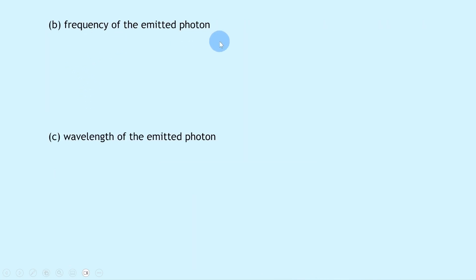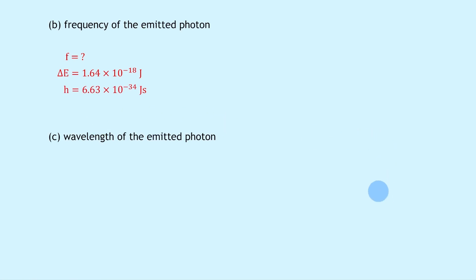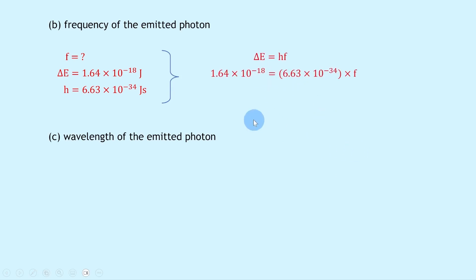Part b says: calculate the frequency of the emitted photon. We're trying to find frequency f. The change in energy from part a is 1.64 × 10⁻¹⁸ joules, and Planck's constant h from the data sheet is 6.60 × 10⁻³⁴ joule-seconds. Writing down our equation: ΔE = hf. Substituting in: 1.64 × 10⁻¹⁸ = 6.60 × 10⁻³⁴ × f.